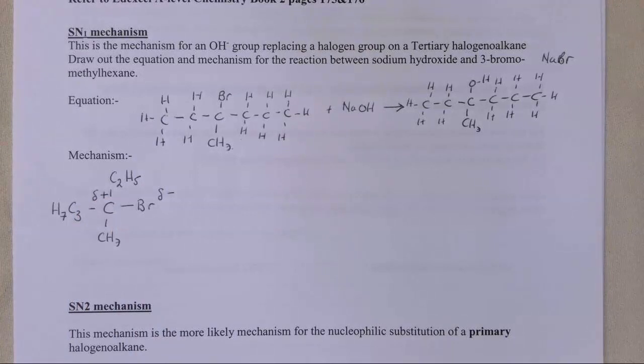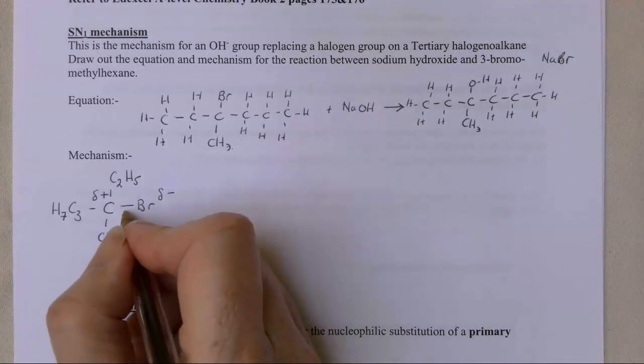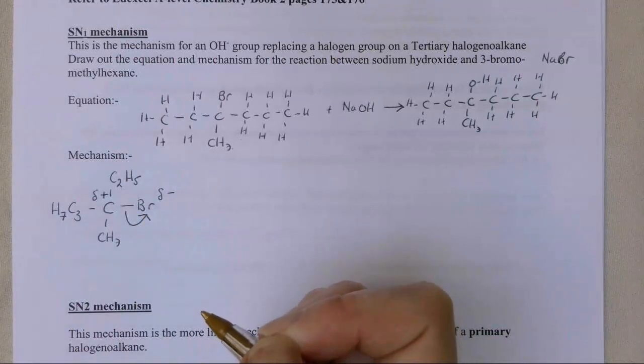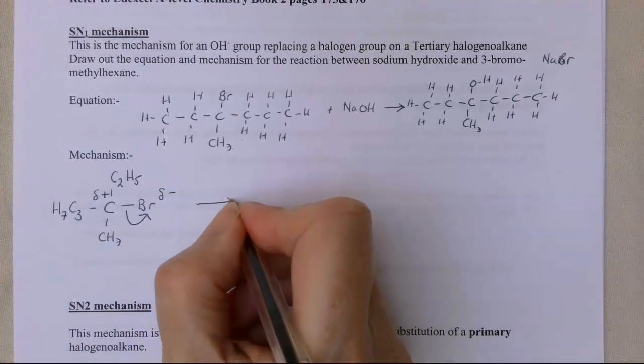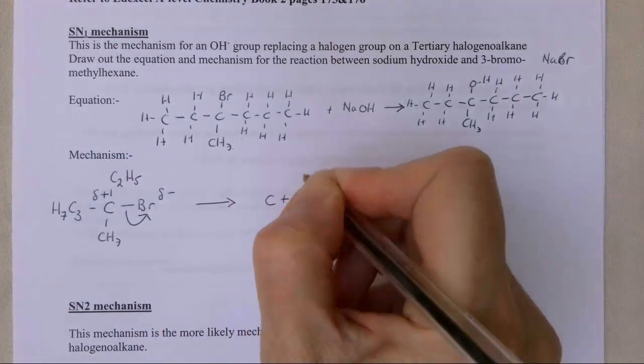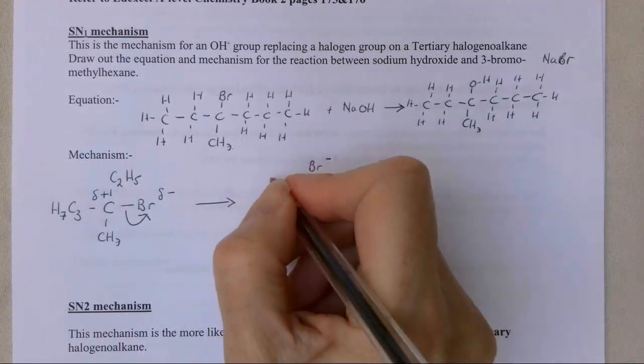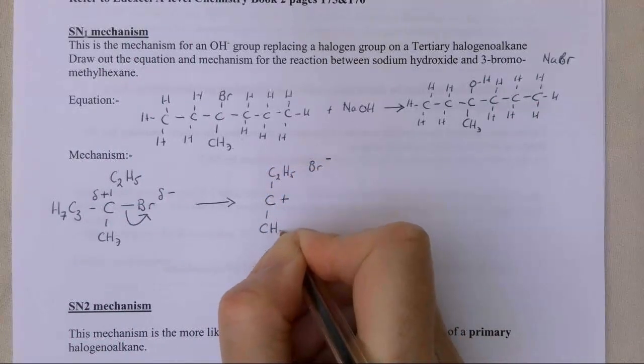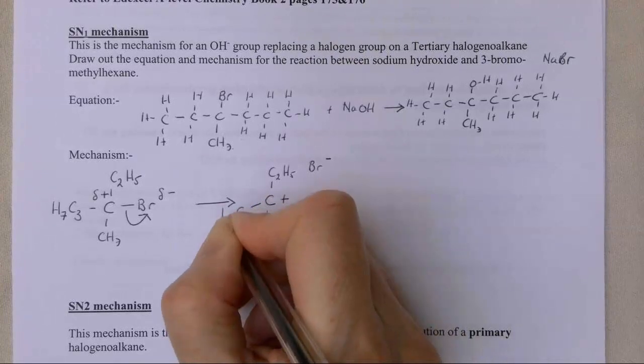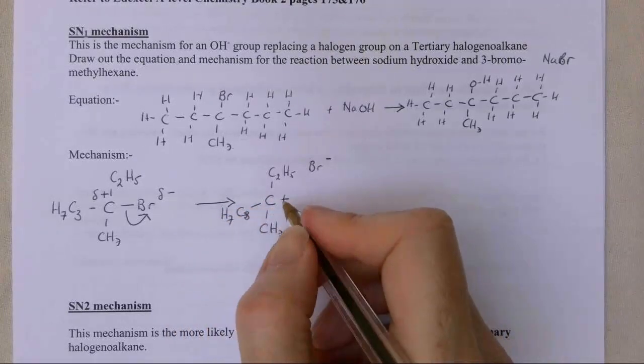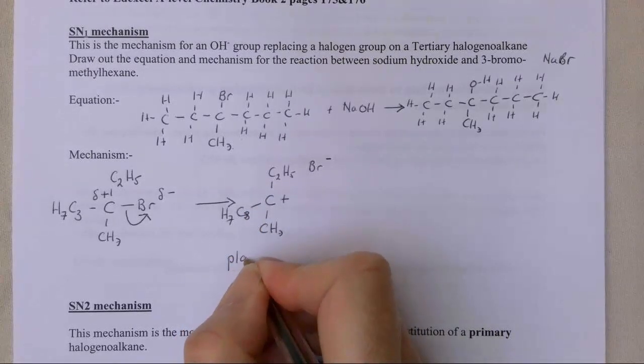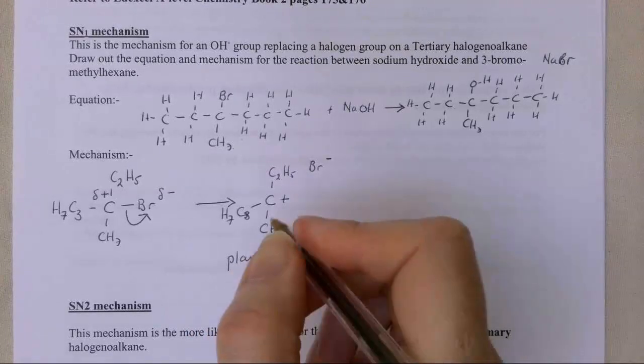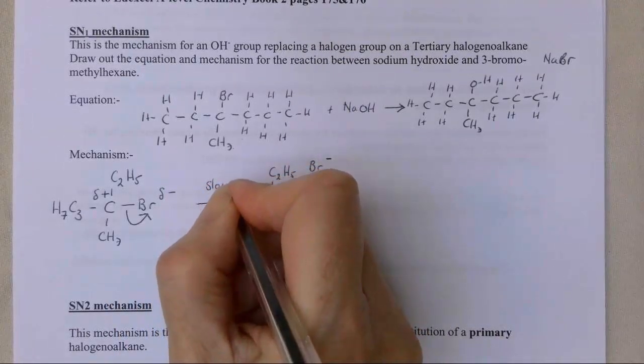Some molecules will have sufficient energy that they will vibrate hard enough that that bond between that carbon and that bromine can break. At that point, the bromine has come loose, it's floating over there somewhere. We get what we call a carbocation being formed, C3H7. This is a carbocation. It's planar and that's important. Then that's my first step and that's what we call my slow step.